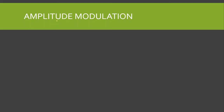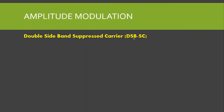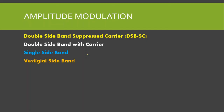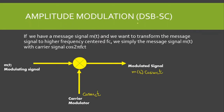The first type of amplitude modulation we will discuss is double sideband suppressed carrier, known as DSB-SC. There is also double sideband with carrier, single sideband, and vestigial sideband. Let us now discuss the double sideband suppressed carrier.